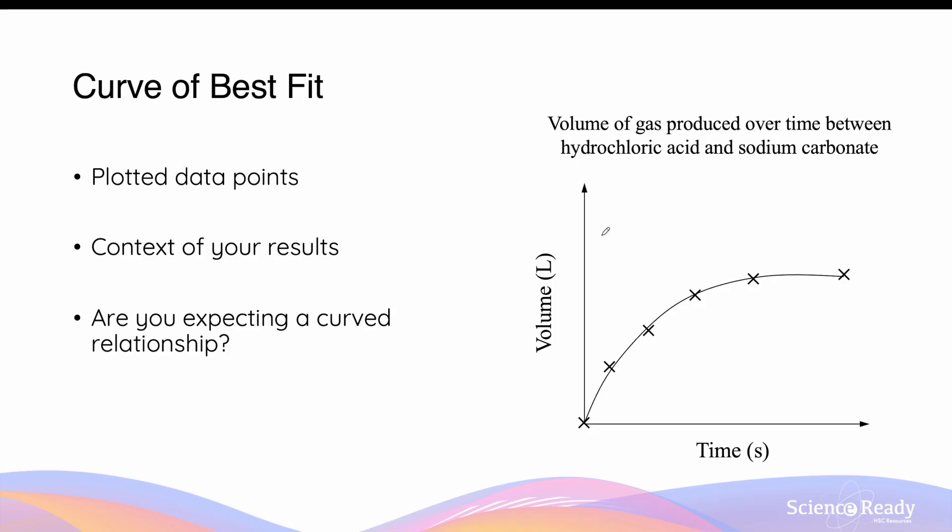The example I've given you here, which has a curve of best fit, is the volume of gas produced over time from the reaction between hydrochloric acid and sodium carbonate. In this graph, not only do the data points resemble a curved relationship, it is also reasonable for us to see a curve trend between volume and time. And this is because the rate of the reaction between the two substances decreases over time, which results in smaller amounts of volume produced per second.